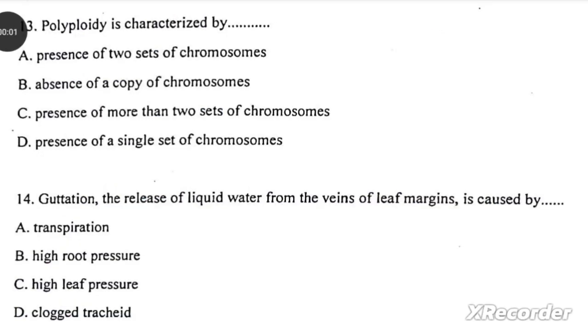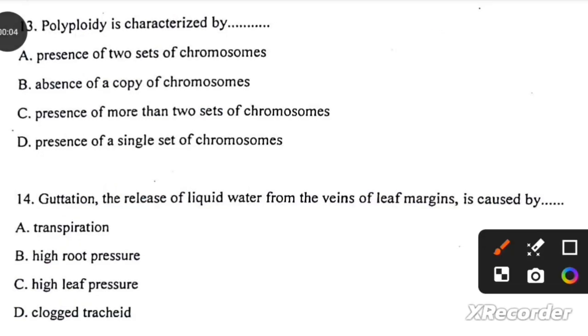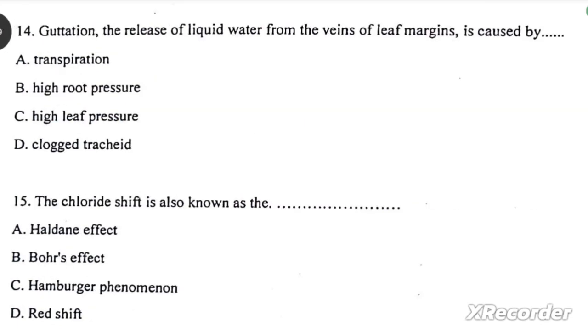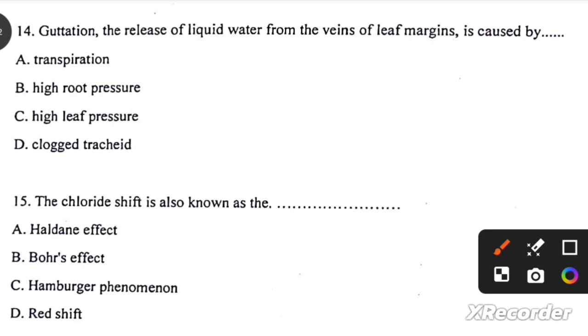Polyploidy is the presence of more than two sets of chromosomes. Guttation, the release of liquid water from the veins of leaf margin, is caused by high root pressure. The chloride shift is also known as the hamburger phenomenon.